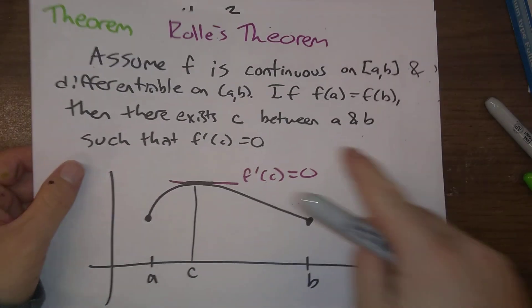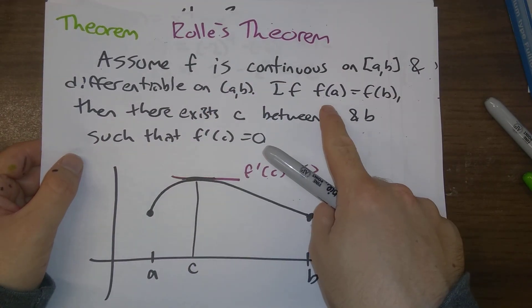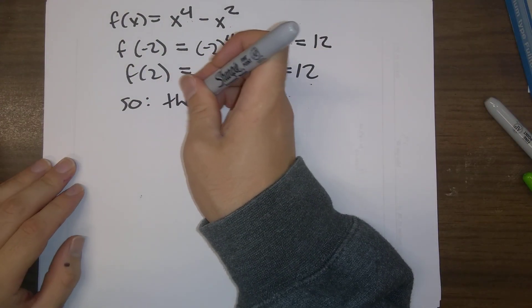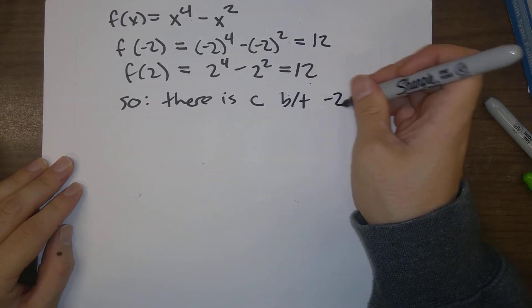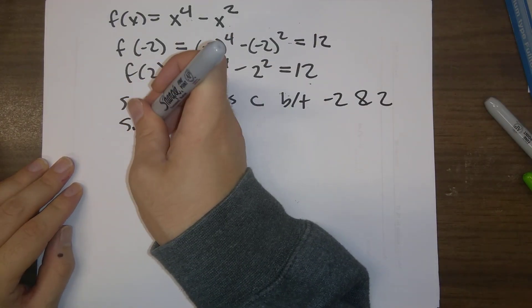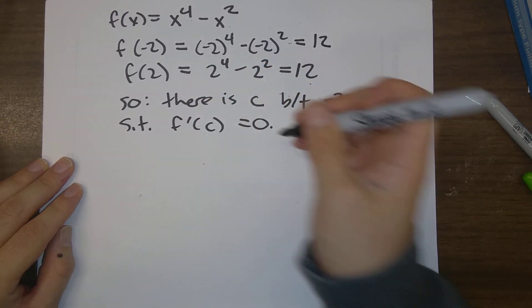So, by Rolle's theorem, everything is nice, f of minus 2 is equal to f of 2, so there is c between minus 2 and 2 such that f prime of c is equal to zero.